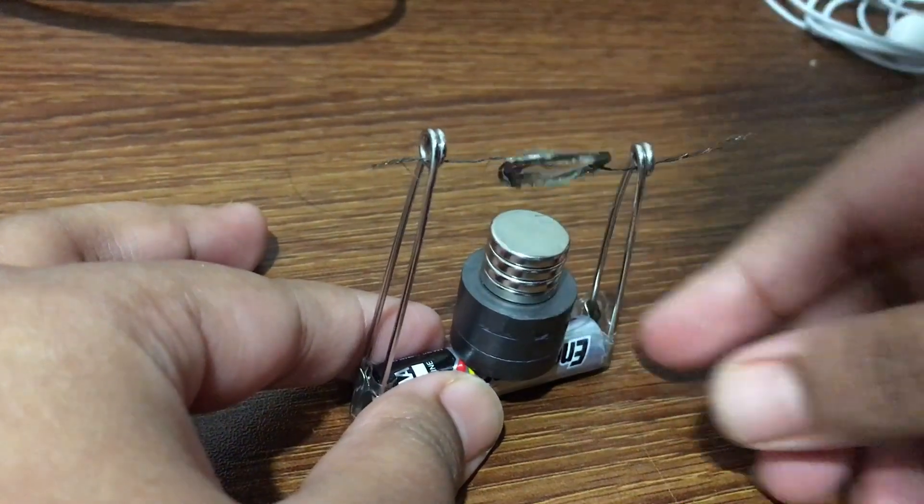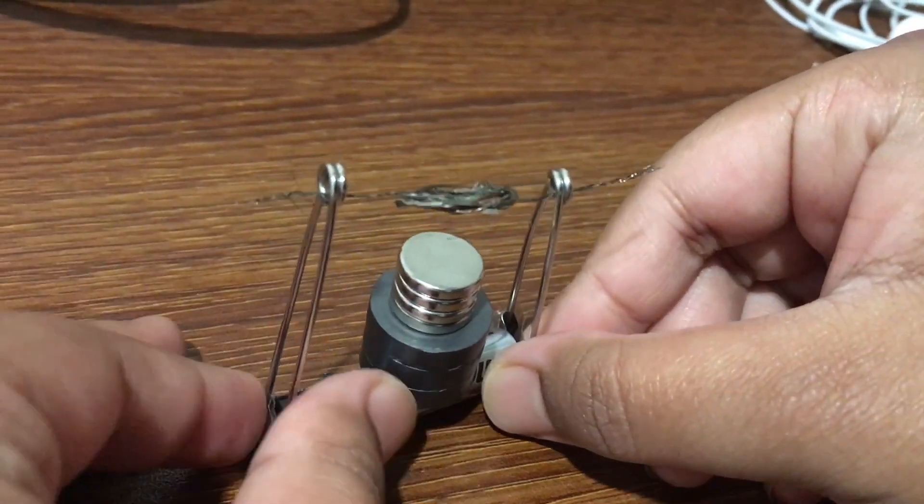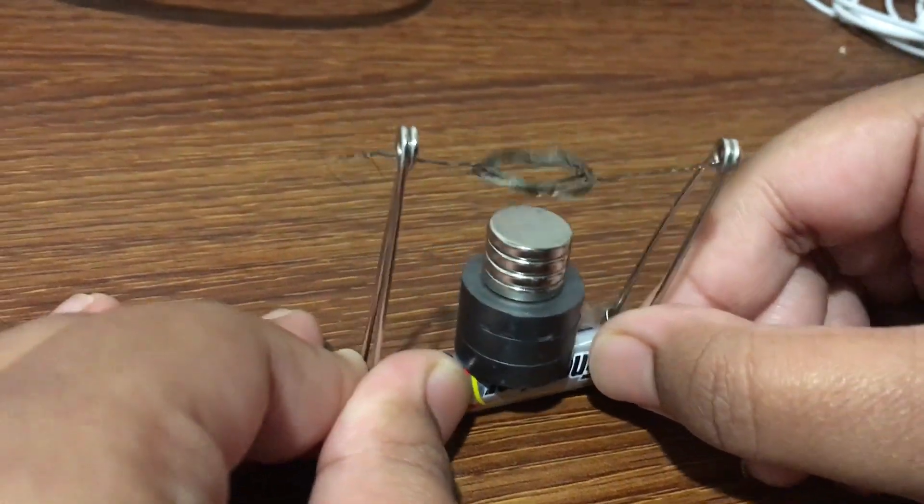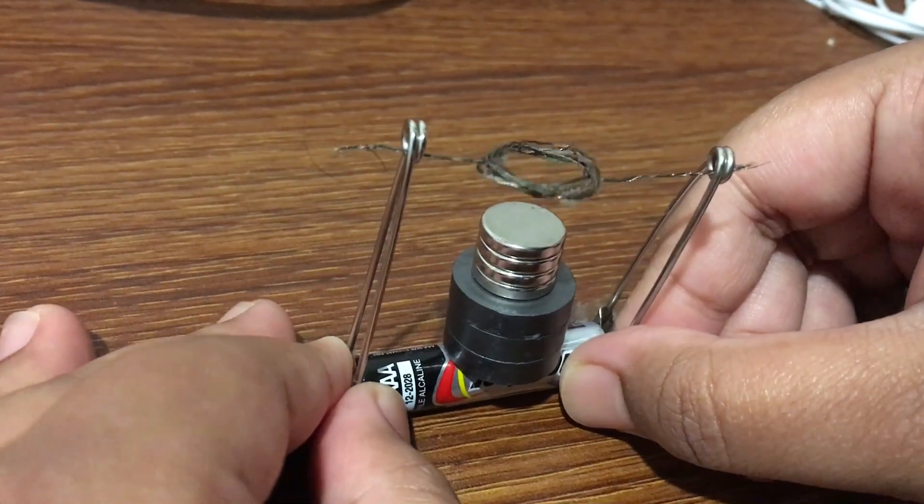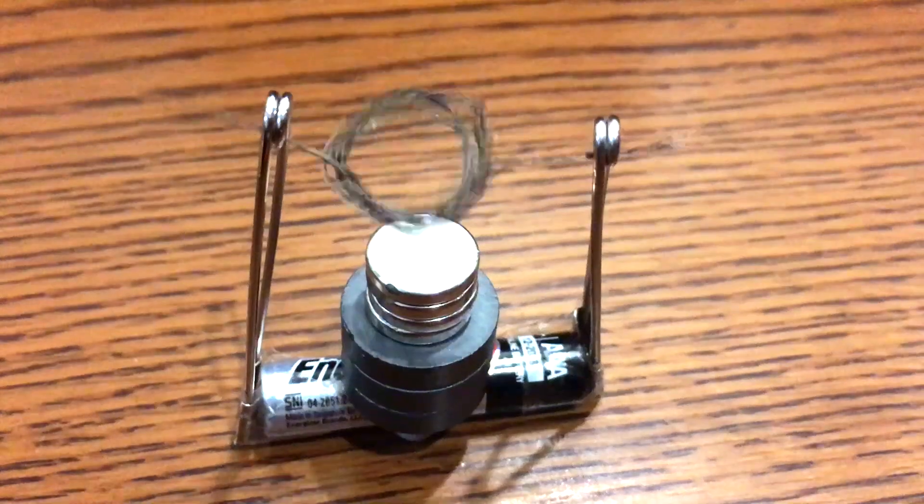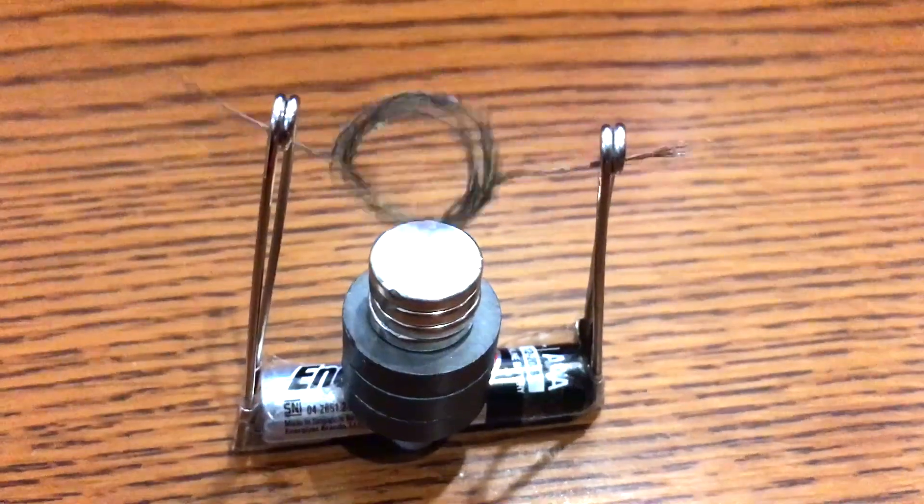If not, you might have to adjust the position of your magnets, safety pins, or the shape of the copper wire. Then it starts working and rotating like this.